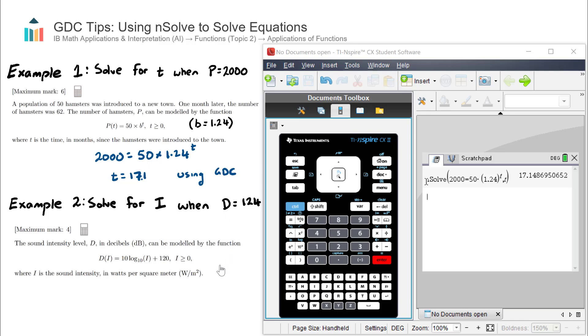Let's substitute that in: 124 = 10 log₁₀(I) + 120, where we're trying to find I. This equation, one equation with one unknown, is quite difficult to solve for I by hand, but we can use numerical solve to find this very quickly and easily. Let's go ahead and use numerical solve.